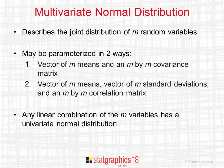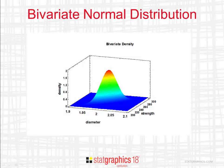The multivariate normal distribution has one very interesting property. Any linear combination of the m variables has a univariate normal distribution. This includes each variable by itself, as well as combinations of all the variables. You see here a bivariate normal distribution fit to the data on diameter and strength. It has a well-defined peak in the center of the distribution and tails off symmetrically in all directions.